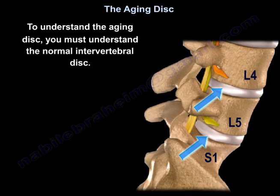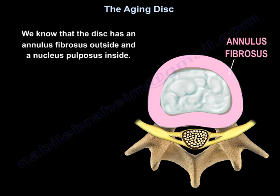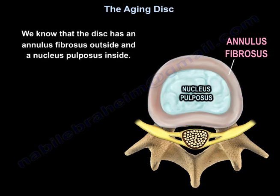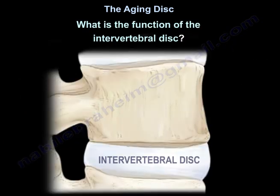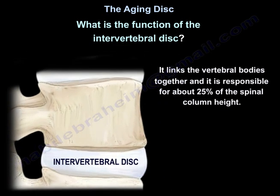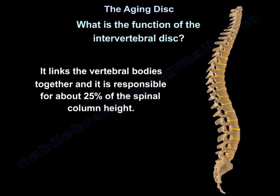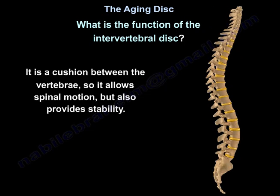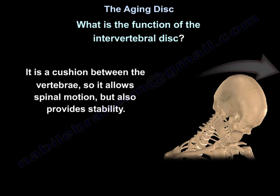To understand the aging disc, you must understand the normal intervertebral disc. The disc has an annulus fibrosis on the outside and nucleus pulposus on the inside. With aging, there is degeneration of the disc that will alter its function. The intervertebral disc links the vertebral bodies together, is responsible for about 25% of the spinal column height, and acts as a cushion between the vertebrae, allowing spinal motion while also providing stability.